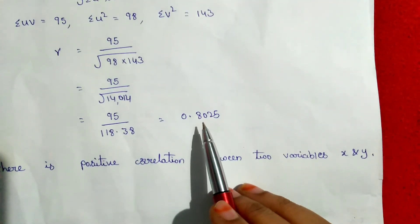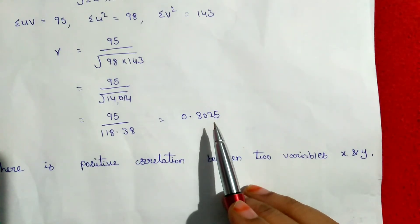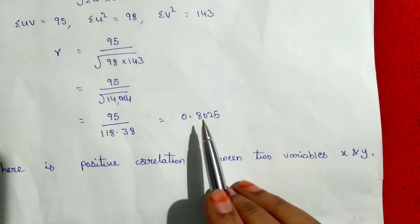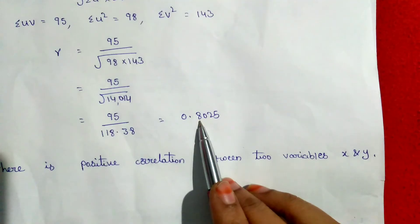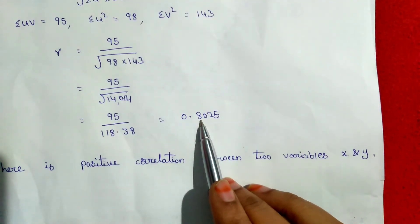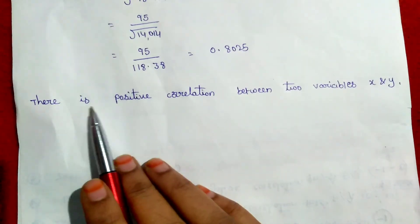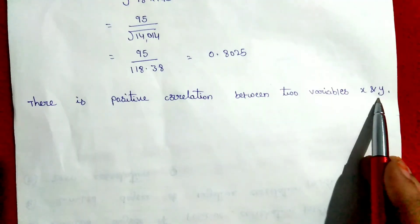If the correlation is 1, then there is a perfect positive correlation between two variables. Here, the answer is approximately 0.8, which indicates a high degree of positive correlation. Since 0.8 is greater than 0.5, we can say there is a good positive correlation. So, there is positive correlation between the two variables x and y.